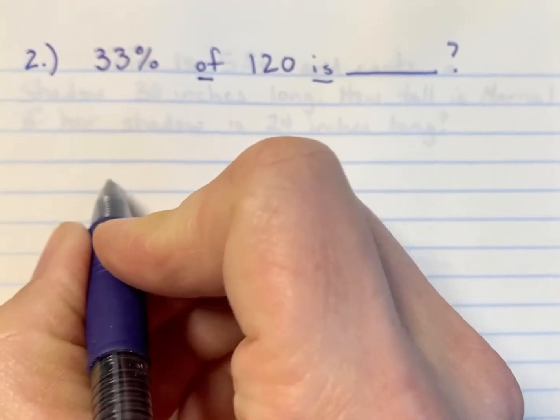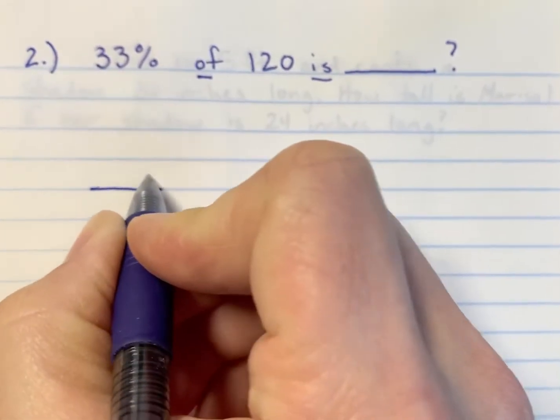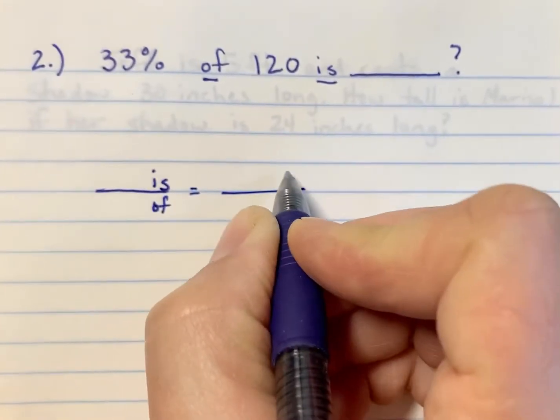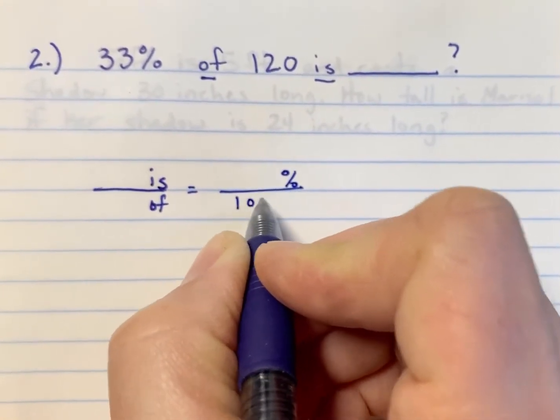So, as you recall, we're going to use a proportion to solve this, just like most things in sixth grade. We have is over of is equal to percent over 100.